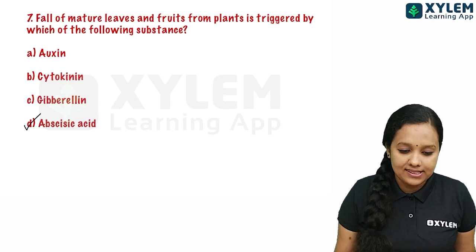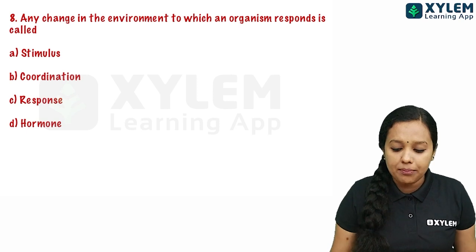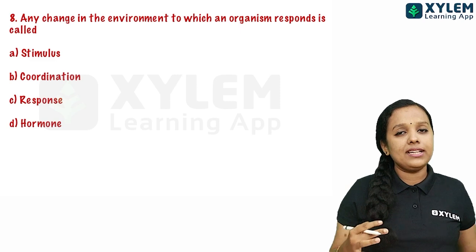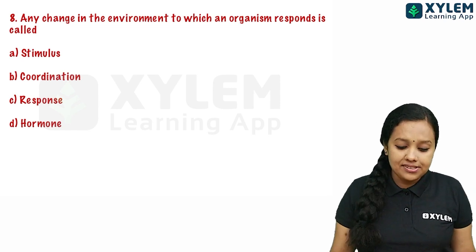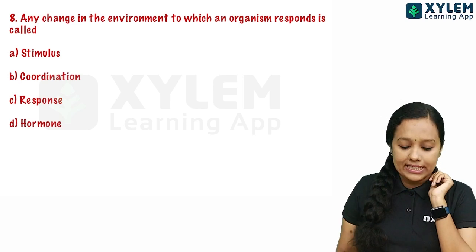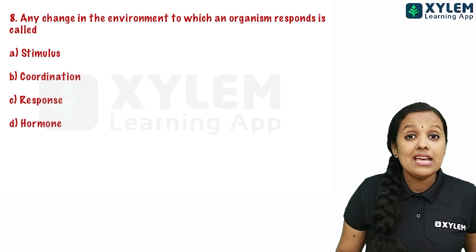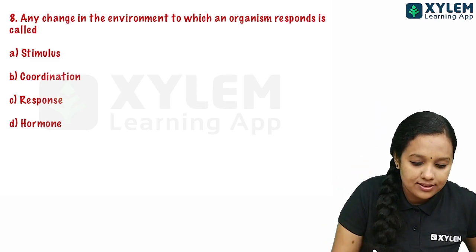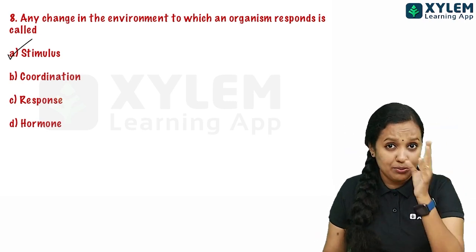The eighth question: any change in the environment to which an organism responds is called — stimulus, coordination, response, or hormone. A hormone is a chemical substance. The correct term for a change in the environment that triggers a response is stimulus.